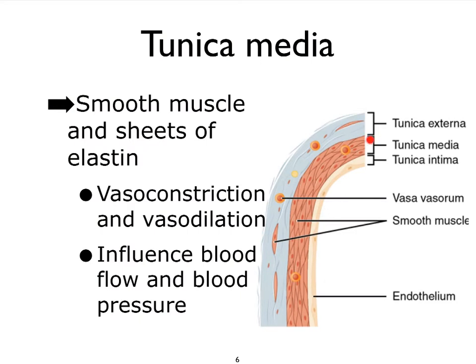The middle layer of most blood vessels is made up of smooth muscle and elastic fibers, and it's called the tunica media, literally meaning the middle layer. The smooth muscle, along with the elastic fibers, are going to allow for the vessel to become bigger or smaller in diameter. We refer to that as vasodilation — vaso always meaning vessel — and vasoconstriction. These two muscle actions are going to play a very crucial role in the regulation of blood pressure and in how well the blood flows through the body.